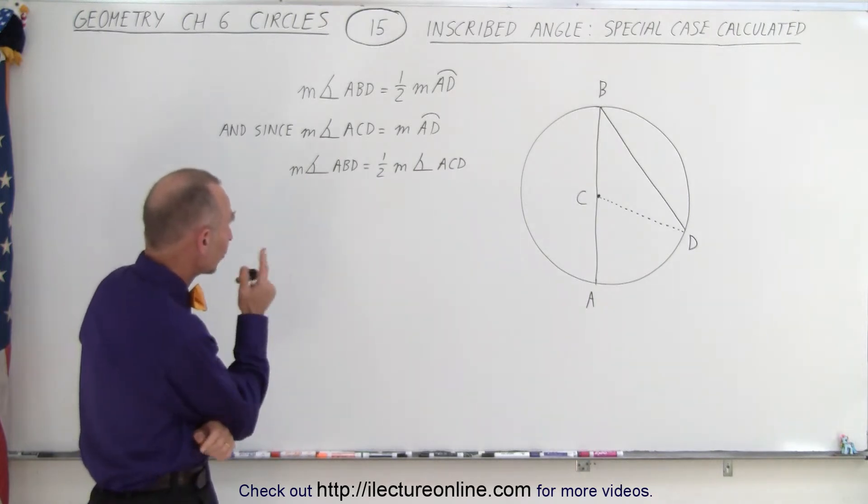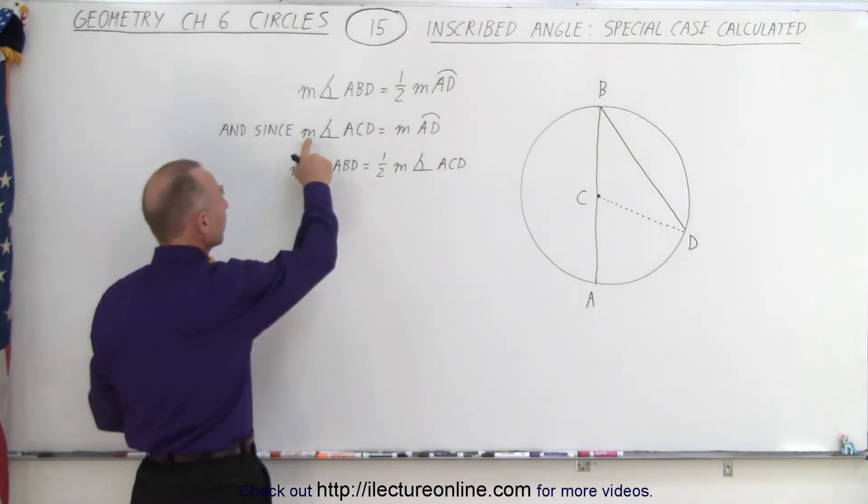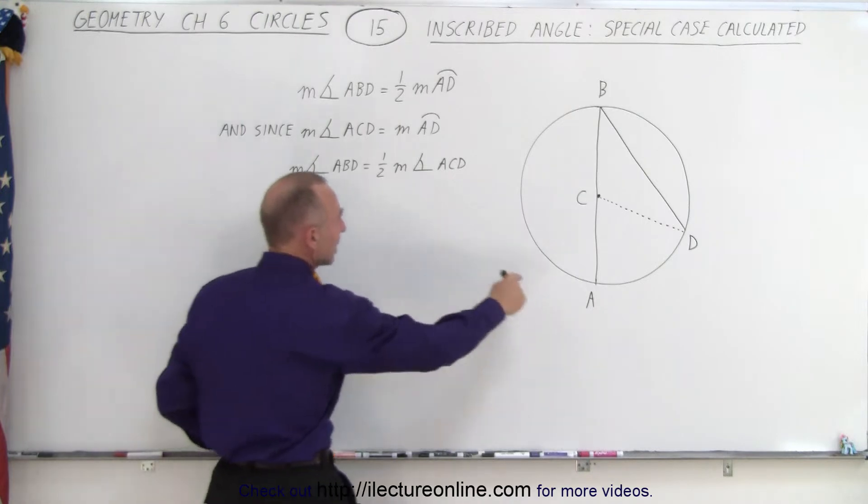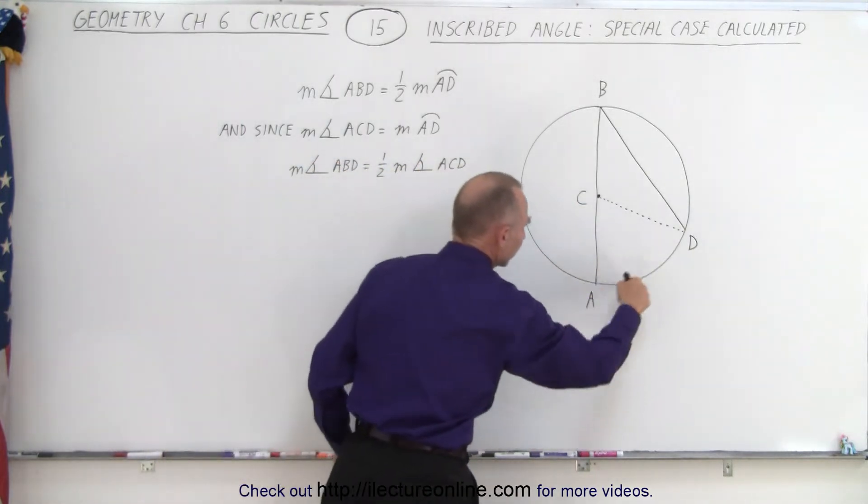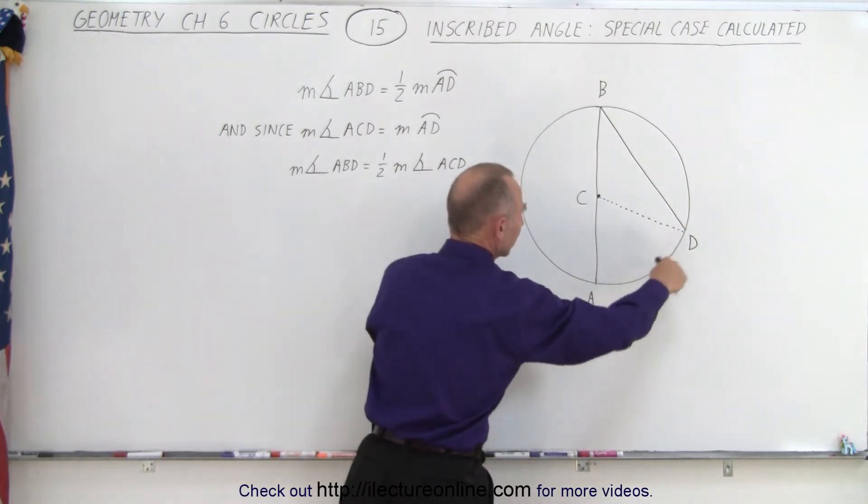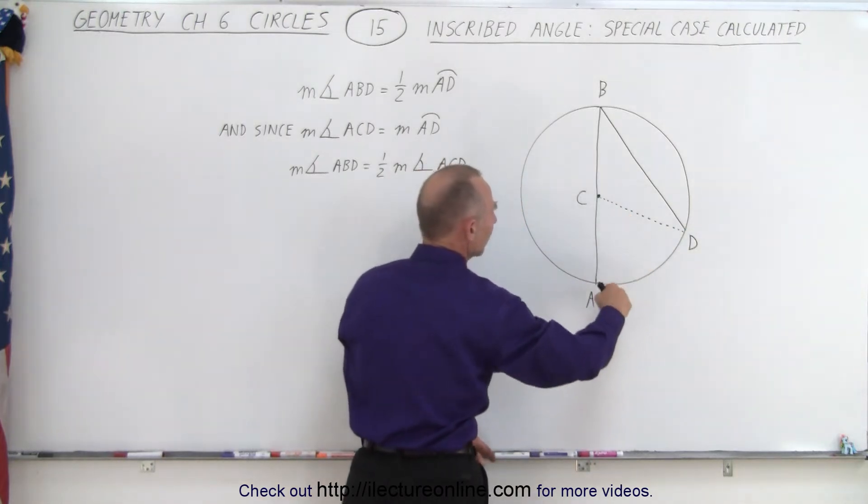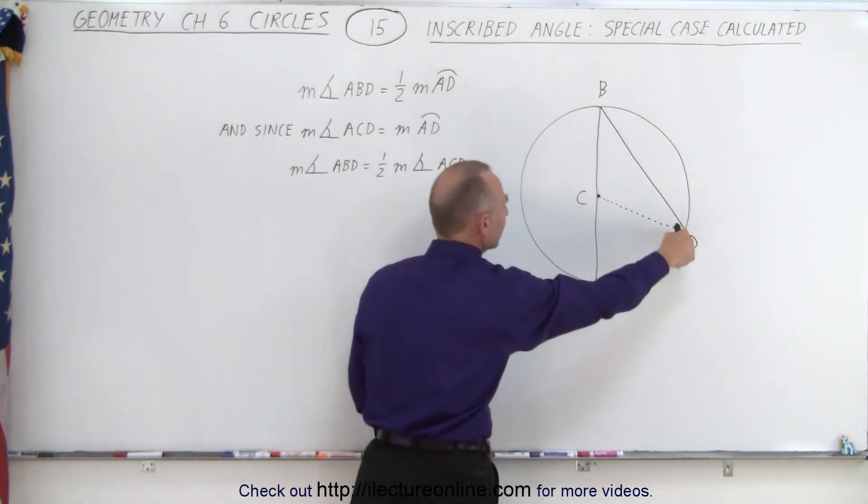And therefore we also know that since the measure of the angle ACD to the center is equal to the measure of the intercepted arc. Notice that the intercepted arc for angle ACD is the same as the intercepted arc for angle ABD.